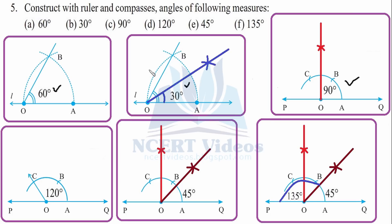For 120 degrees — first make 60 degrees by opening up to OA, then point at B and make another 60 degrees. Adding both gives 120 degrees. For 45 degrees — you already know 90 degrees, so just bisect it. From this semicircle the two points will draw an arc. Open your compasses with the same radius and cut from A as well — that gives your 45 degrees.